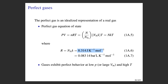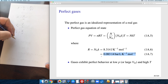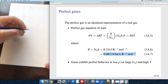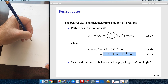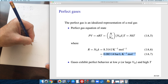In SI units, R = 8.314 joules per Kelvin per mole. If you prefer to use bar rather than Pascal, the gas constant is expressed as 8.3145 × 10⁻² bar·liters per Kelvin per mole.